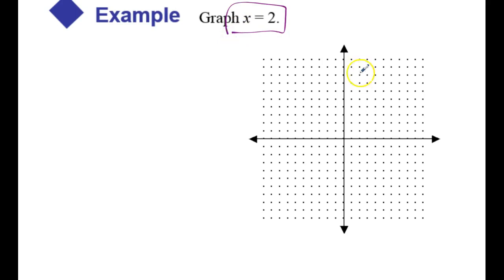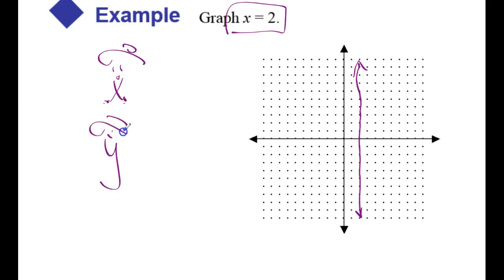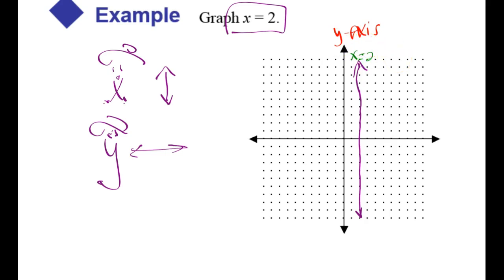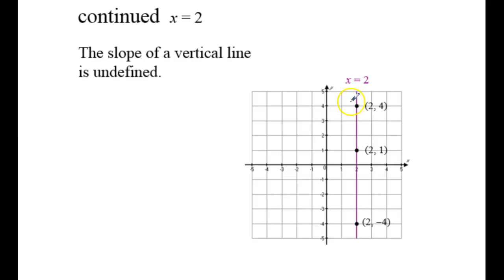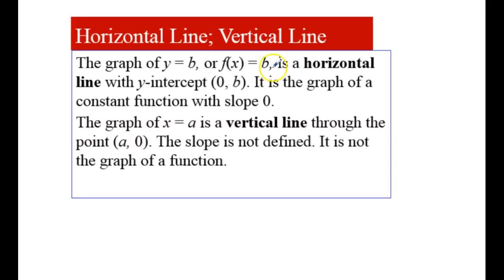Similarly, x equaling 2 is a vertical line. One way you can remember that is: Mr. X has two legs, and so with two legs you're going to stand up. Mrs. Y only has one leg, and so with one leg you would eventually fall down. So y is the horizontal and x is the vertical. Be careful — this looks like the equation of the y-axis. Don't get the axis mixed up with the equation of the line, which is x equals 2. They're parallel. The slope of this vertical line is no slope, or undefined slope, which we'll talk about in a later video. For every value of y — it doesn't matter if it's 4, 1, or negative 4 — x is always 2. Horizontal lines are y equals something. Vertical lines are x equals something.